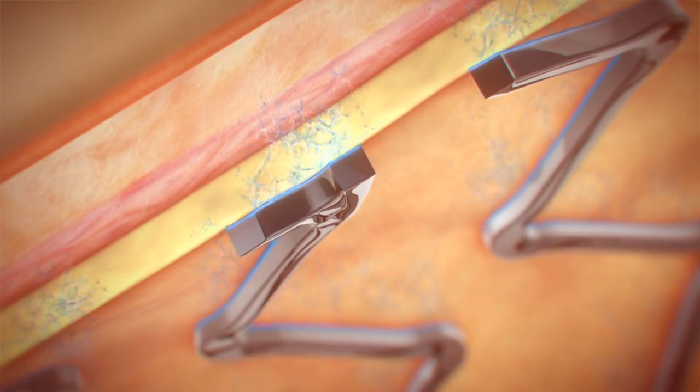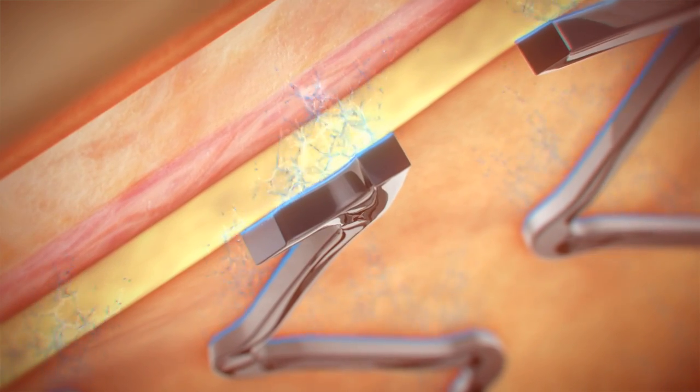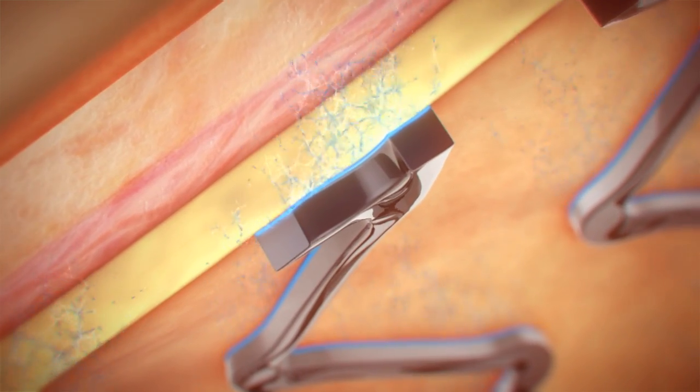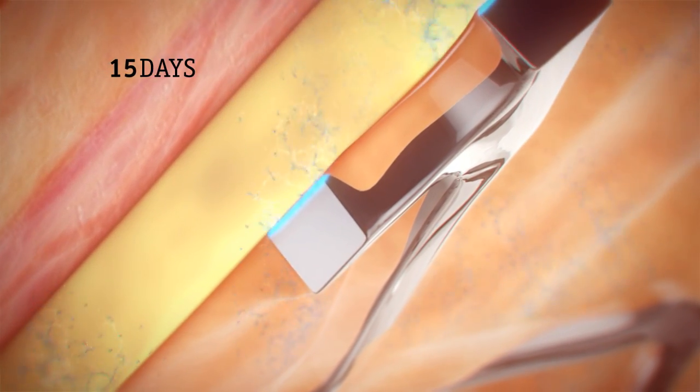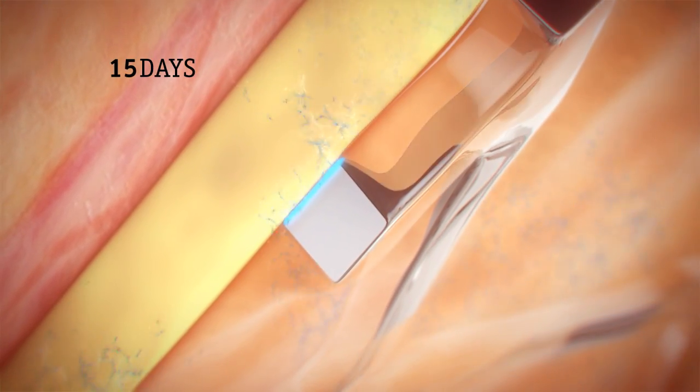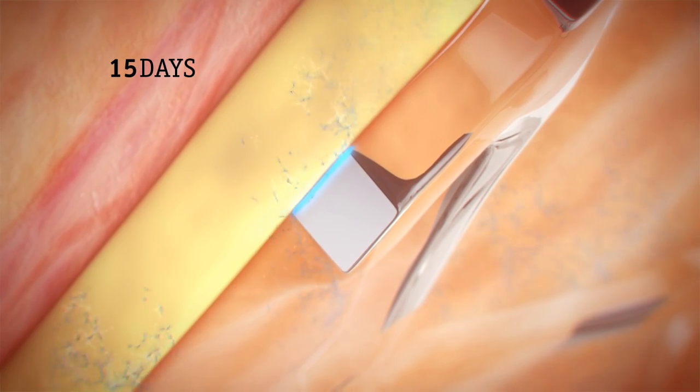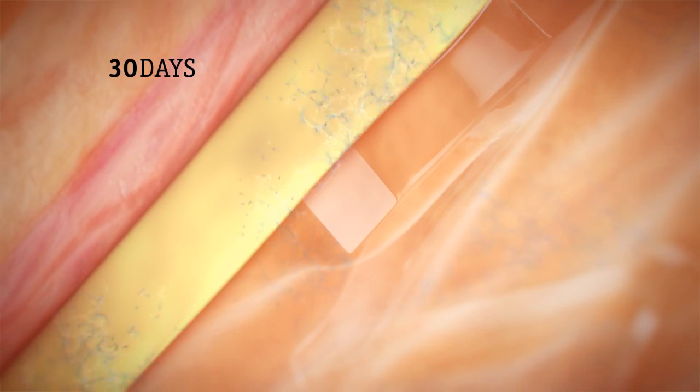This unique coating is applied only to the abluminal side of the stent, while the lumen side is bare metal platinum chromium. The abluminal coating design prevents cell proliferation within the smooth muscle cells, while promoting healthy and rapid endothelialization within the vessel lumen, allowing for early healing.